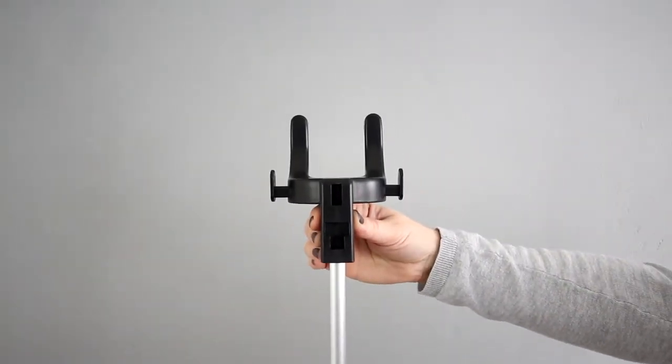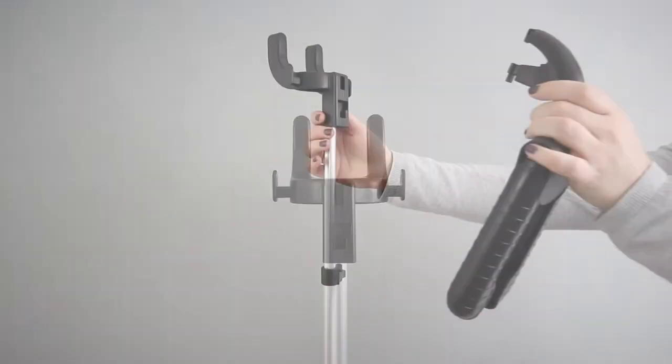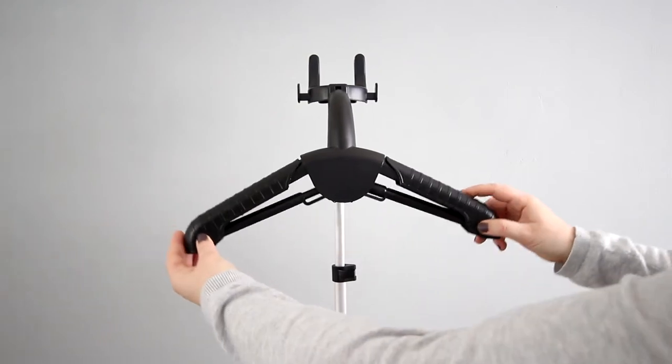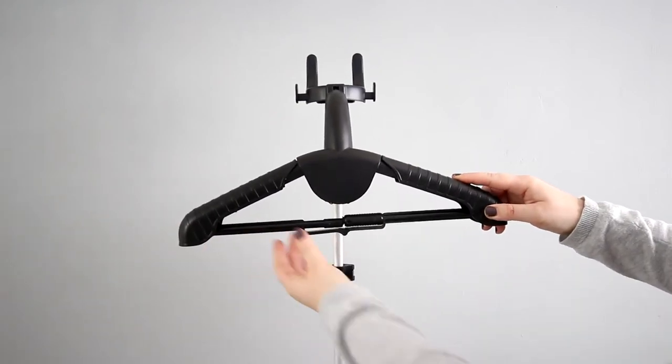Slot the head hanger onto the top of the telescopic pole. Take the hanger and attach to the head hanger. Open the hanger up and secure with the sliding lock.